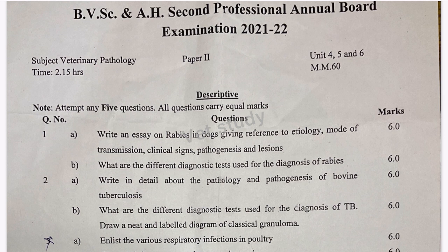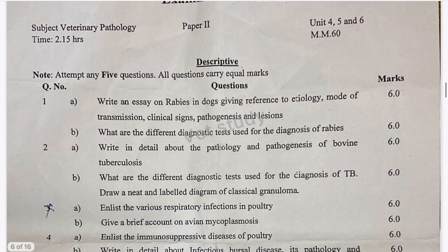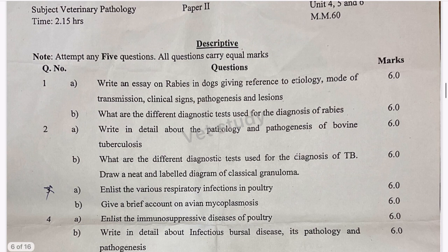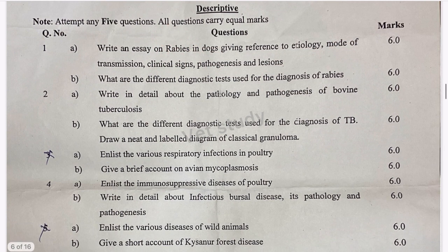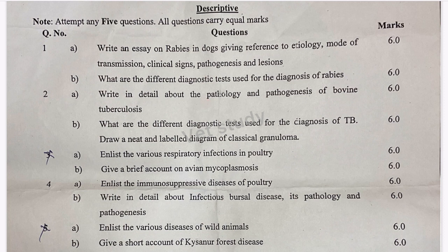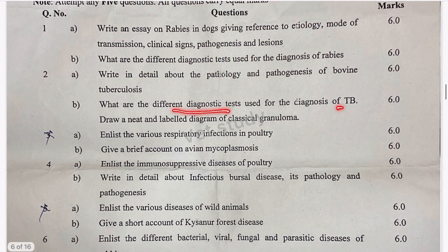Moving to Paper 2, covering units 4, 5 and 6. Rabies in dogs is asked — etiology, mode of transmission, clinical signs, pathogenesis and lesions. Diagnosis of rabies is also important. Pathology and pathogenesis of bovine tuberculosis and its diagnostic tests are important as well.